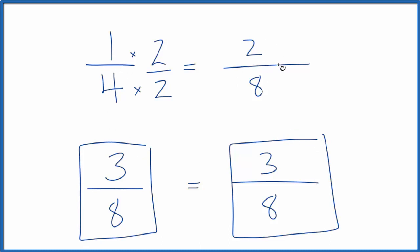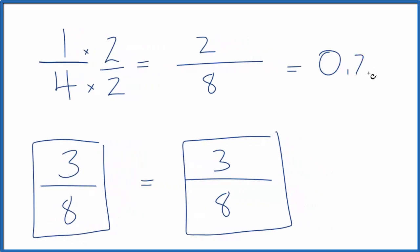The other way we could do it is we could actually divide 1 by 4 and we'll get a decimal, which is 0.25. If we divide 3 by 8, we get 0.375.